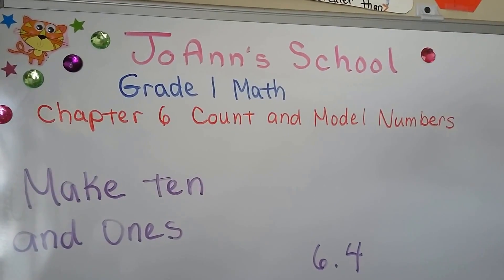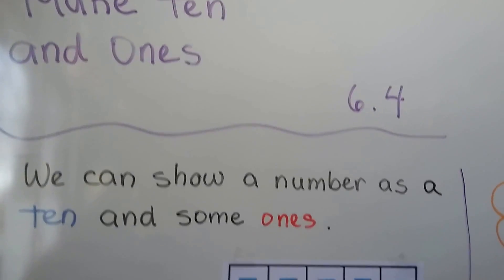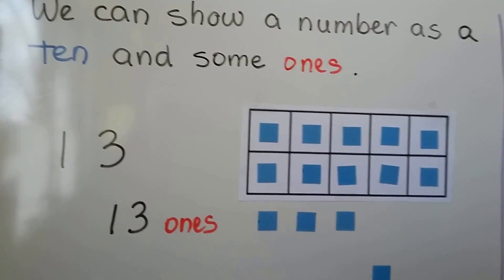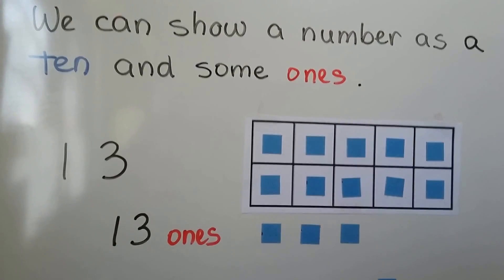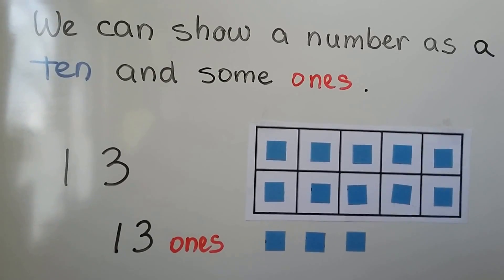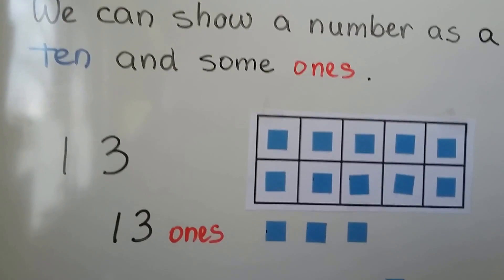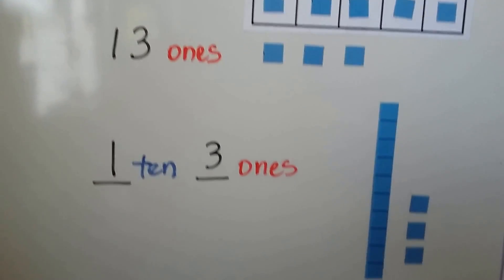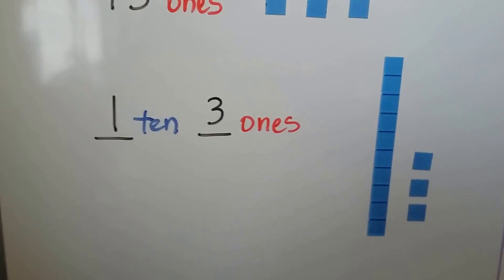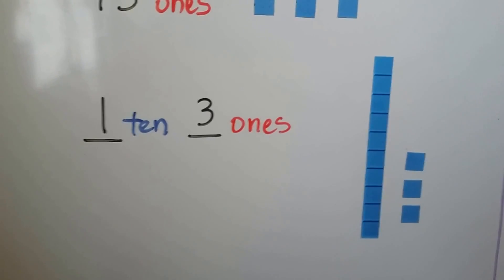Make ten and ones less than 6.4. We can show a number as a ten and some ones. Thirteen — we have thirteen ones. We have ten ones that filled the ten frame and three more. We can also say it's one ten and three ones. Here we have a bar of ten and three ones.